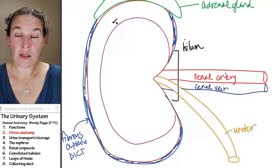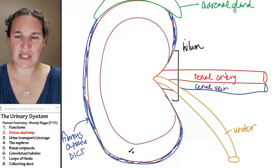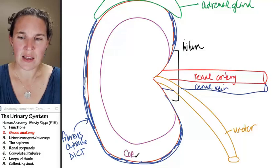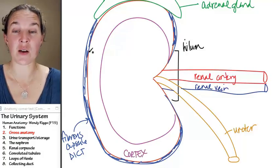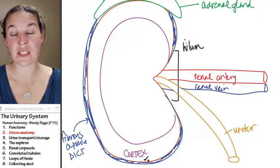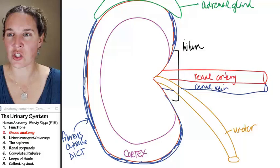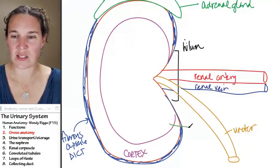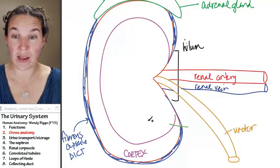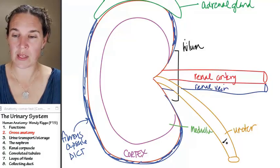This whole area that is lined by the purple, this is the cortex. We will see what kind of anatomical structures are found in the cortex of the kidney. The cortex is in contrast to the medulla of the kidney. This whole area is the medulla of the kidney.